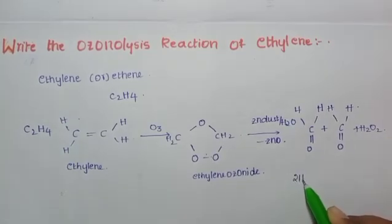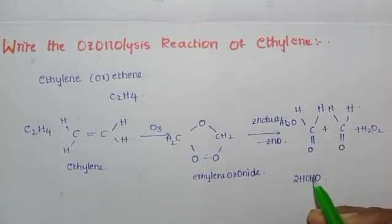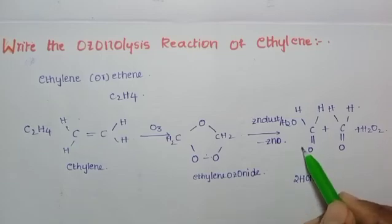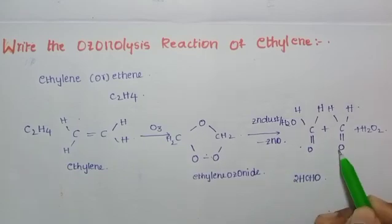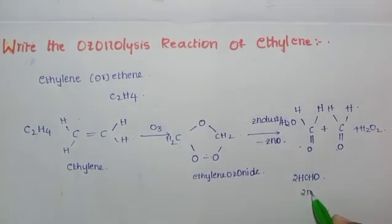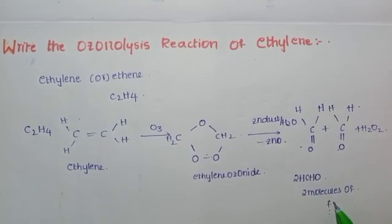The structural formula of formaldehyde is HCHO. We get one molecule of formaldehyde and a second molecule of formaldehyde — so two molecules of formaldehyde — plus H2O2 as the products of the ozonolysis of ethylene.